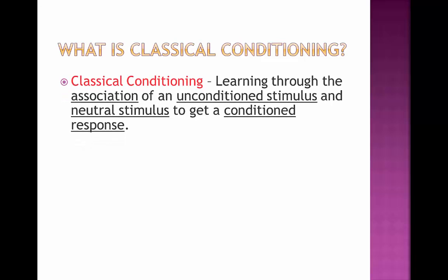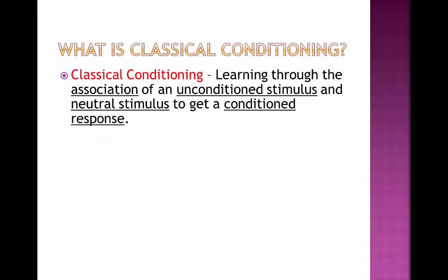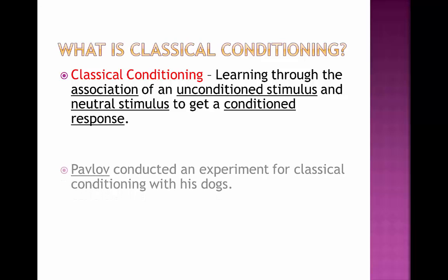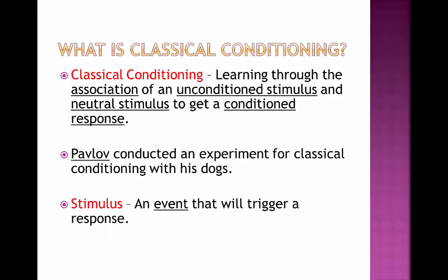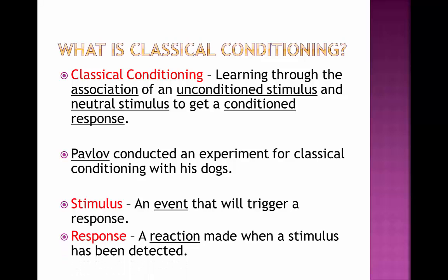So what is classical conditioning? Classical conditioning is the way that we suppress these drivers by learning through the association of an unconditioned stimulus and a neutral stimulus in order to get a conditioned response. If you don't know what this means, don't worry — we're going to run through some examples with diagrams. Pavlov conducted an experiment for classical conditioning with his dogs. A stimulus is an event which will trigger a response, and the response is the reaction made when a stimulus has been detected — this is the basis of how classical conditioning works.